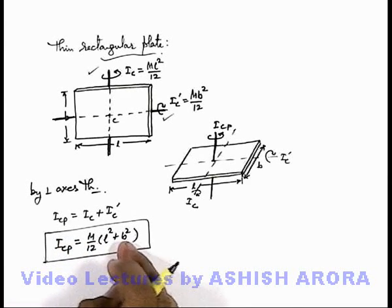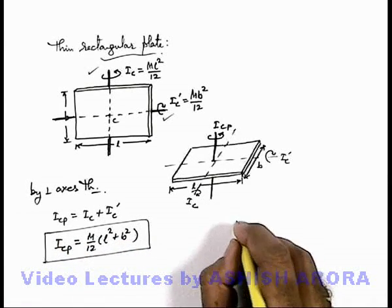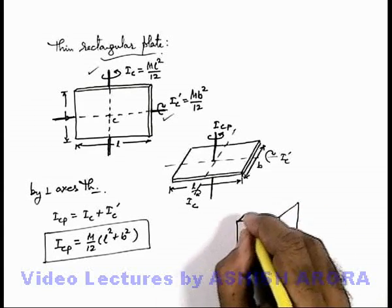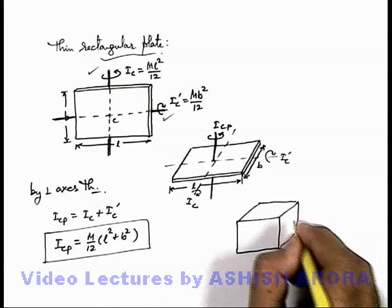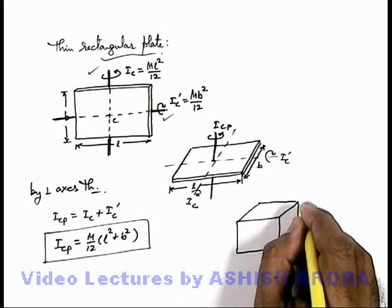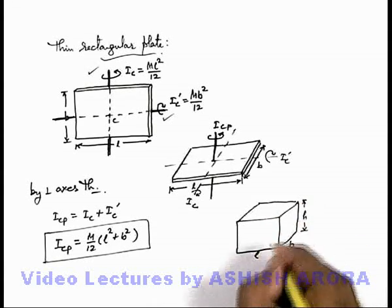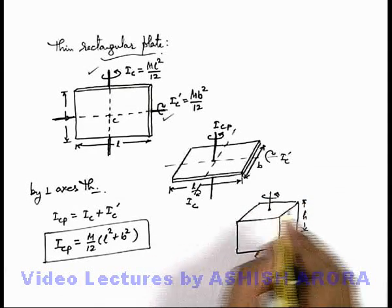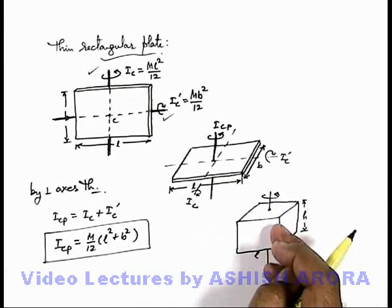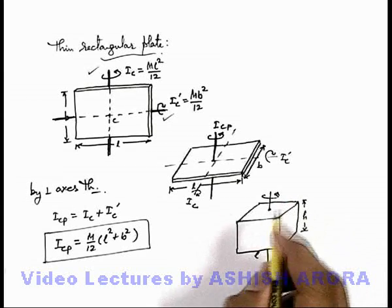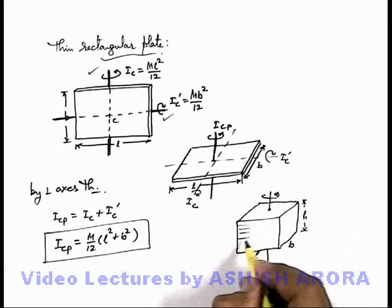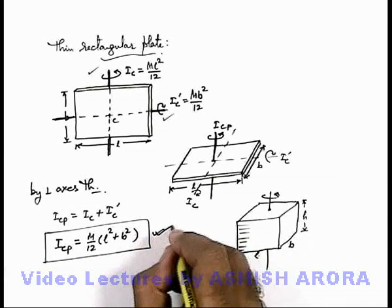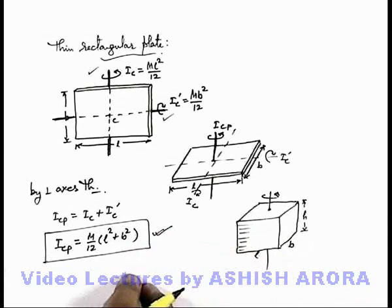The same result can be extended to a box of height h, length l, and breadth b rotating about its central axis. By using the mass distribution property, we can assume the box is made up of several thin rectangular plates of size l by b, so the same moment of inertia m(l² + b²)/12 is applicable for the box as well.